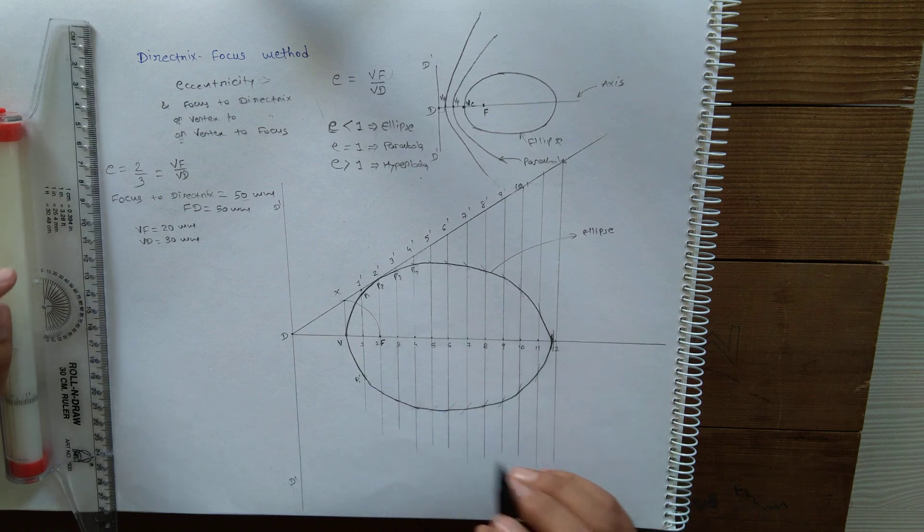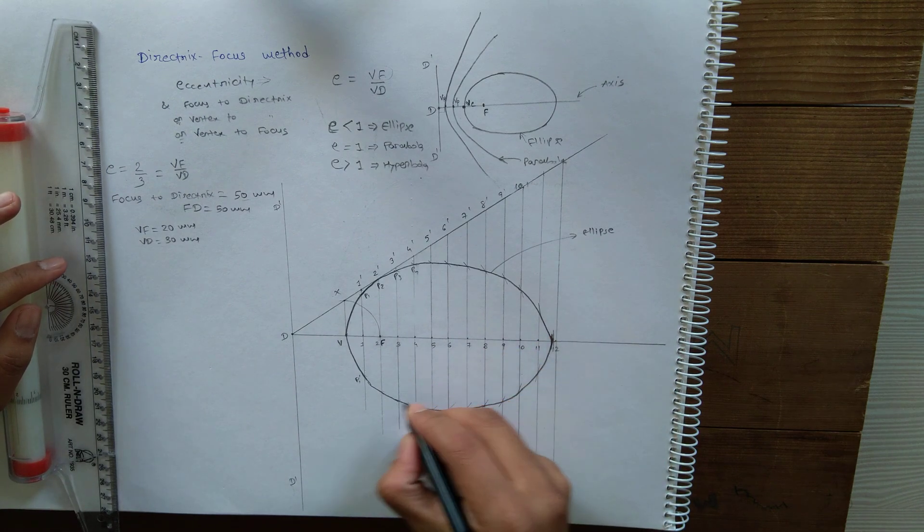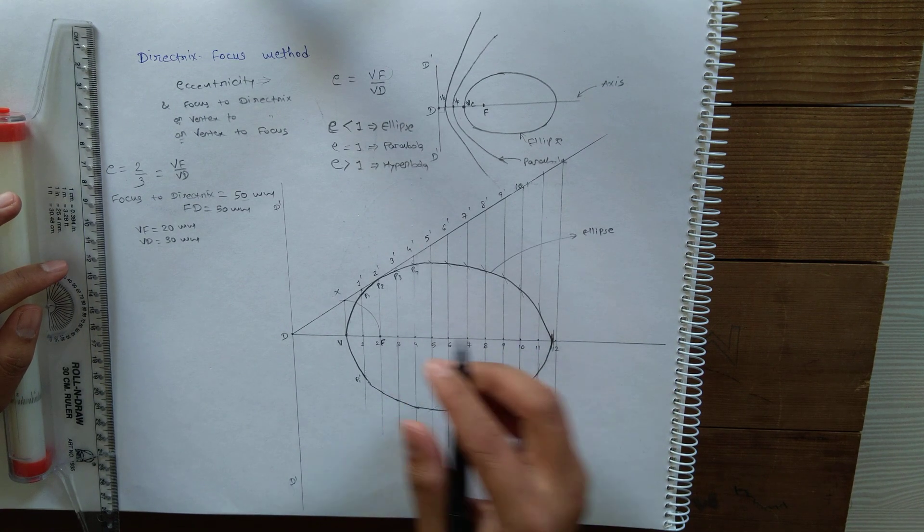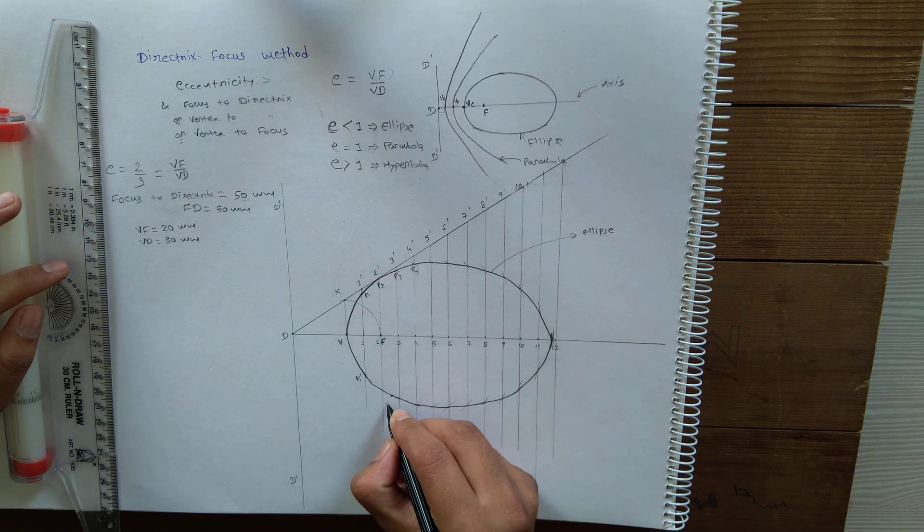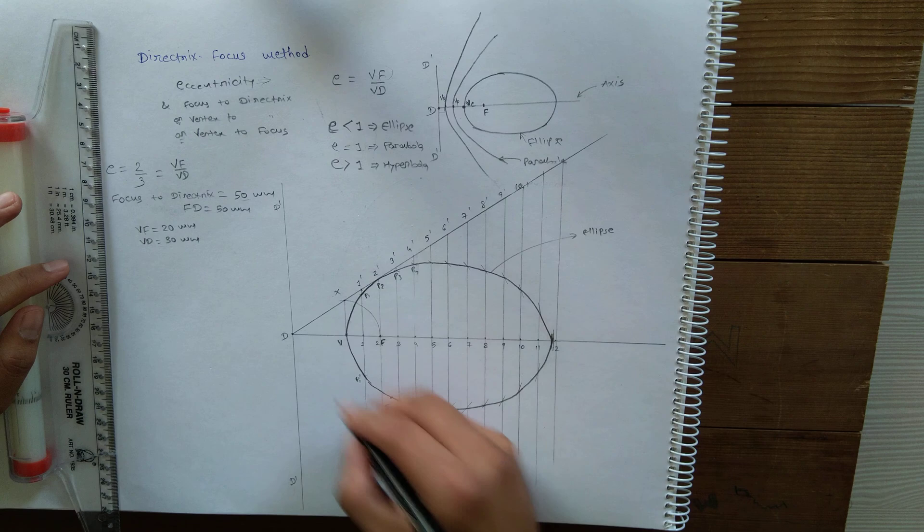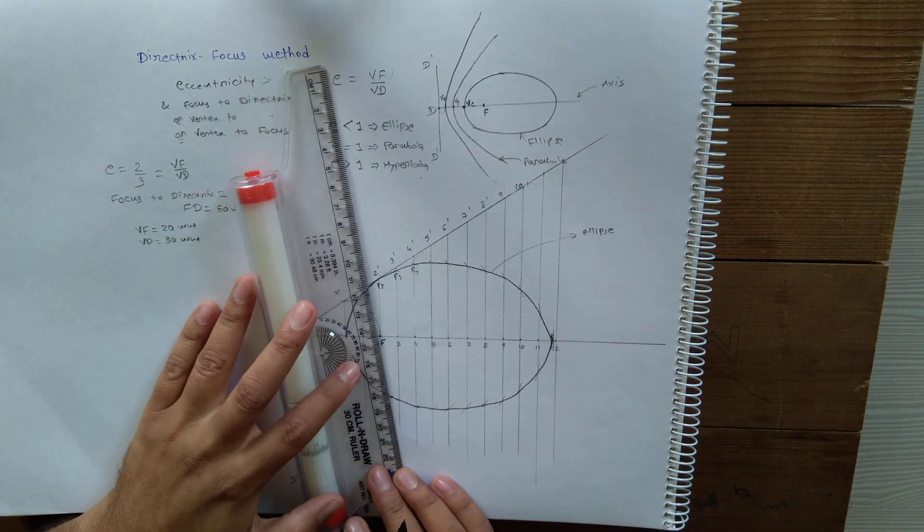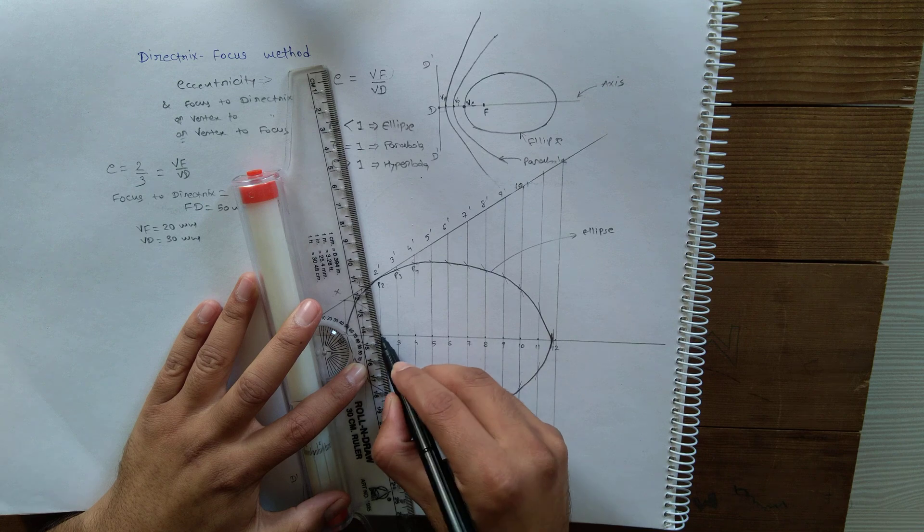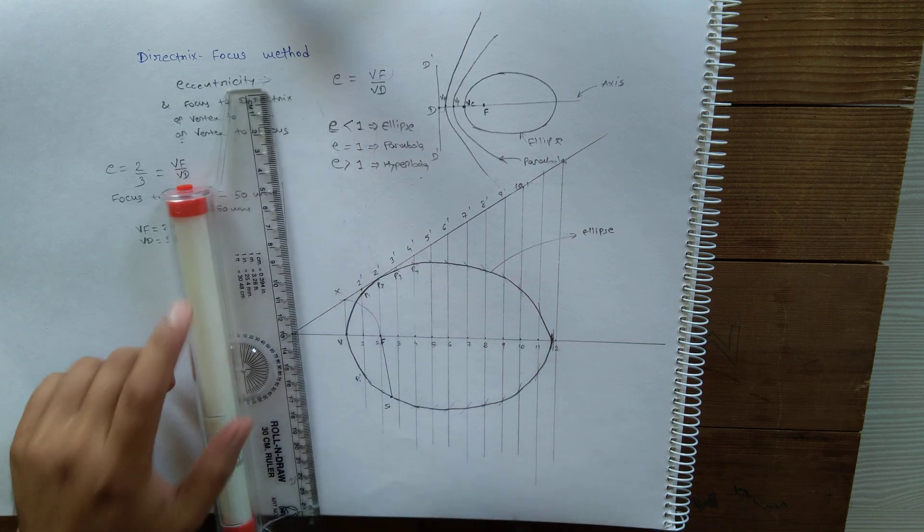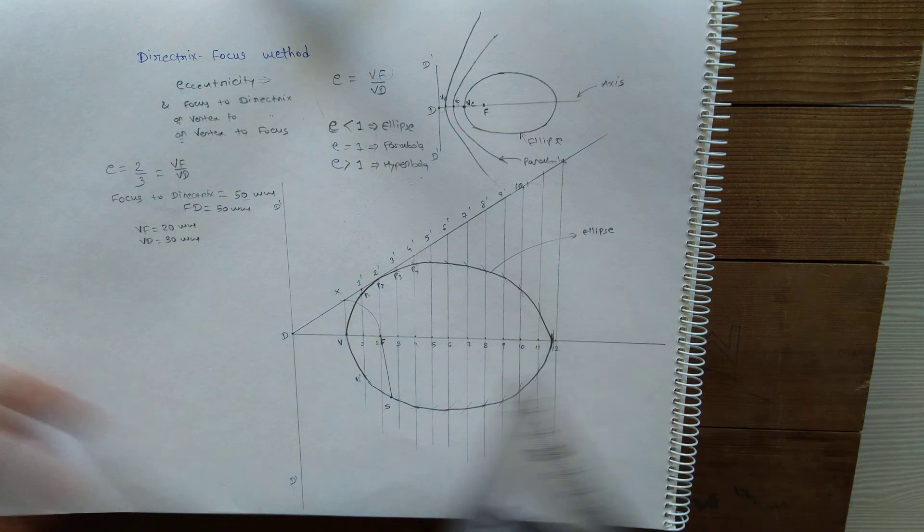To draw tangent and normal, I am taking point S on the curve. I'm joining this S with the focus.